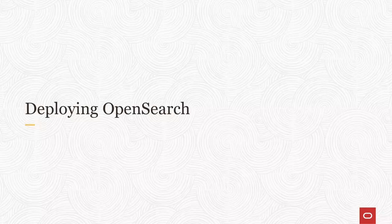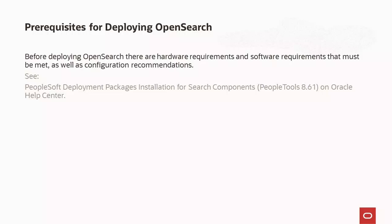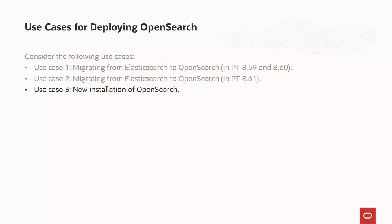Now we'll discuss the important process of deploying OpenSearch in a PeopleSoft implementation. Before you begin deploying OpenSearch, review the hardware requirements, software requirements, and other configuration and performance recommendations for OpenSearch. You can find this information in PeopleSoft Deployment Packages Installation for Search Components PeopleTools 8.61 on Oracle Help Center. We'll discuss three use cases: how existing Elasticsearch 7.0 or 7.10 users can seamlessly migrate to OpenSearch without re-indexing in PeopleTools 8.59 and 8.60; how an existing Elasticsearch user can migrate to OpenSearch without re-indexing in PeopleTools 8.61; and a fresh installation of OpenSearch.